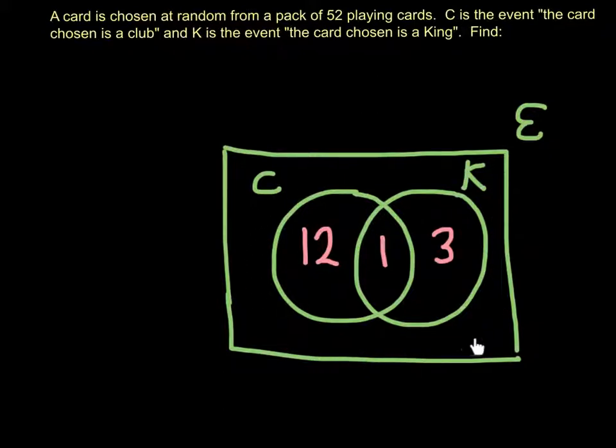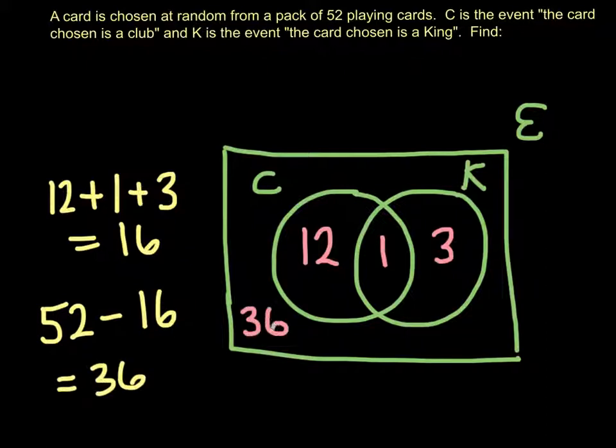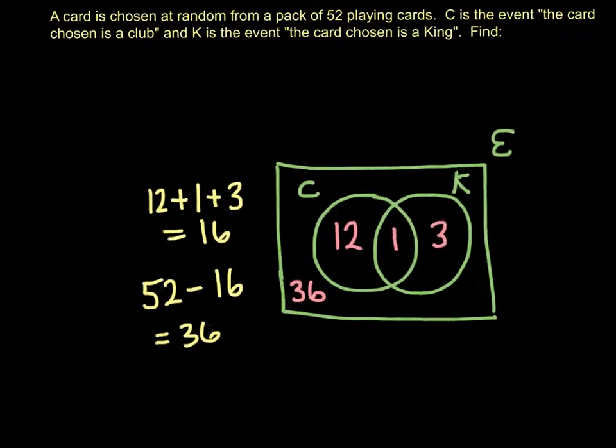Then also, we're only dealing with clubs and kings at the moment. So there's all the diamonds and hearts cards and the spades cards as well. So if we do 52, take away 12 plus 1 plus 3, that's going to be 52 take away 16. And then that number is going to go outside the circles in that box, so it'll be 36. So then that's everything, all the sections of our Venn diagram are filled in.